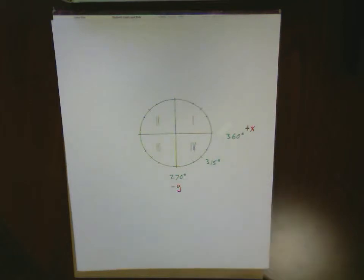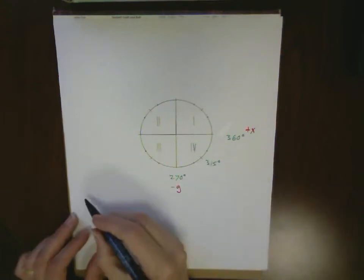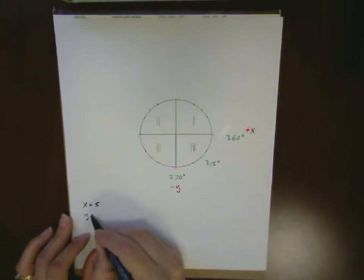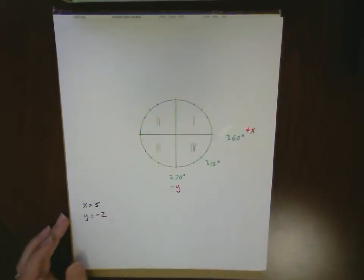If we take a look at that, we're always going to have positive x values and negative y values. Let's take an example. Maybe we've got an x equal to 5 and a y equal to minus 2.